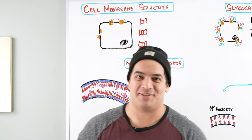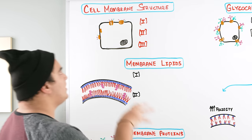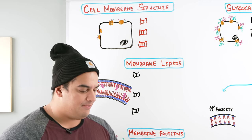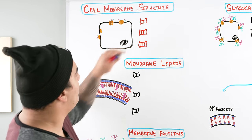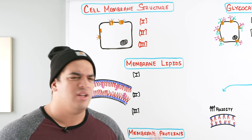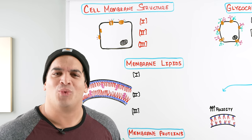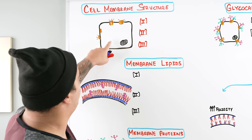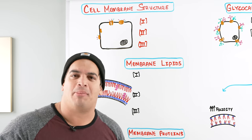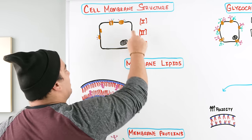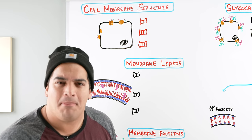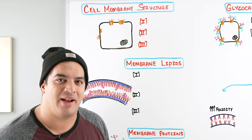Let's talk about the cell membrane. When we go through the cell membrane, I want us to cover the structure and the function — those are the two components. The cell membrane acts as a barrier between the intracellular and the extracellular fluid, and there are a lot of different components to it. When you look at the structure, you see this thin membrane made up of very special components.